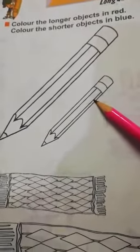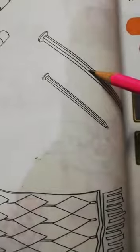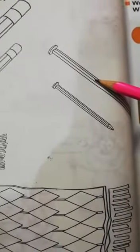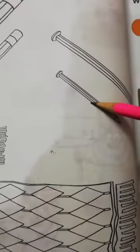जो बड़े वाला है, long है. उसमें आपने कौन सा कलर करना है? Red and then small वाले में? Blue. Nail है, नेल में जो long वाला है, उसमें कौन सा कलर करेंगे? Red. Small वाले में? Blue.